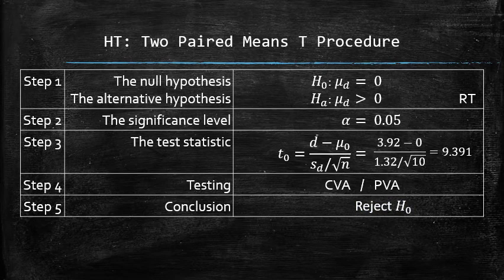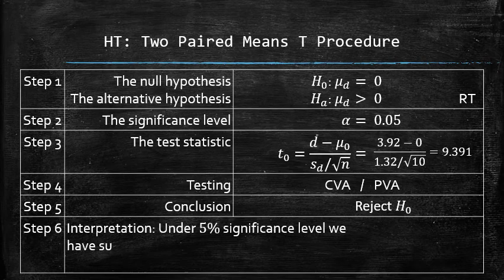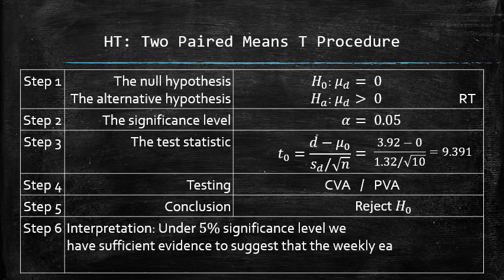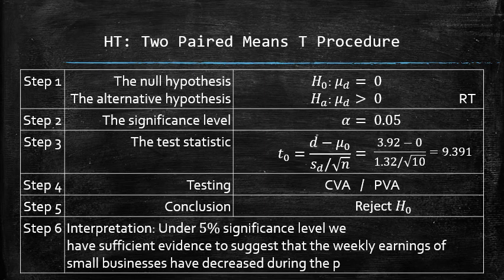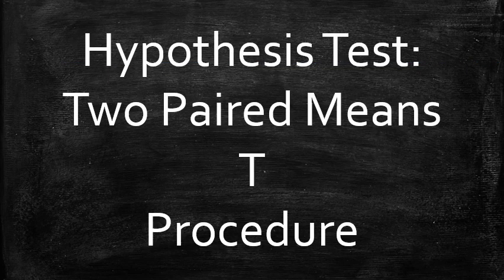Next, we are going to interpret the results. Under the 5% significance level, we do have sufficient evidence to suggest that the weekly earnings of small businesses have decreased during the pandemic. The hypothesis test is complete. I just showed how to apply the two-paired means t procedure to test a statistical claim about two-paired population means.